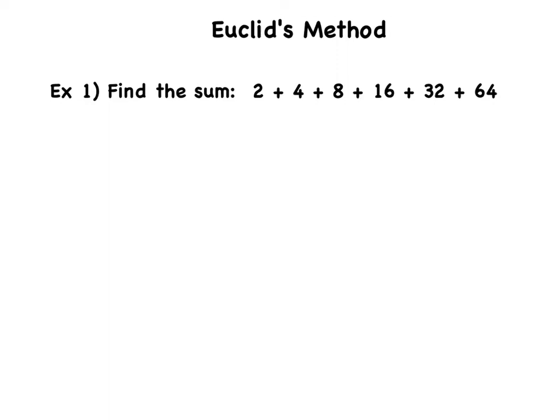In this video, we look at another technique for adding up numbers that are arranged in a specific way. This method is attributed to the mathematician Euclid. We need to find the sum of 2 plus 4 plus 8 plus 16 plus 32 plus 64.